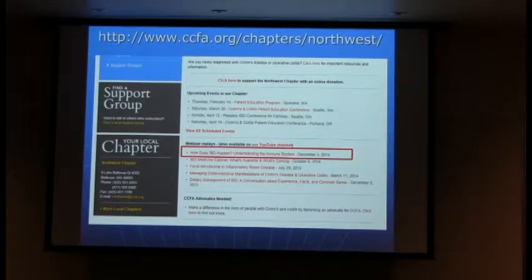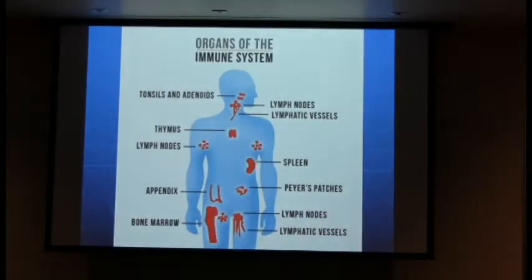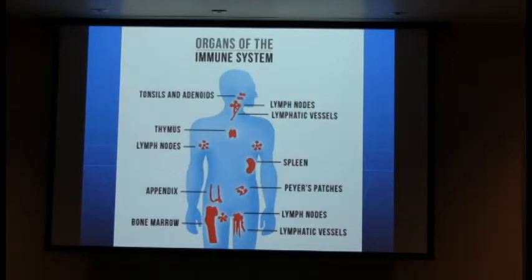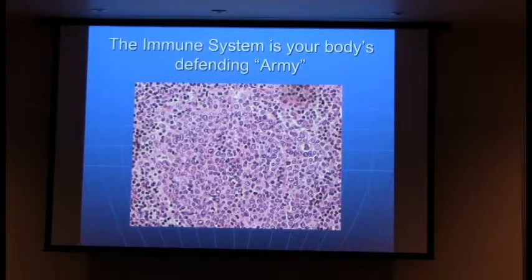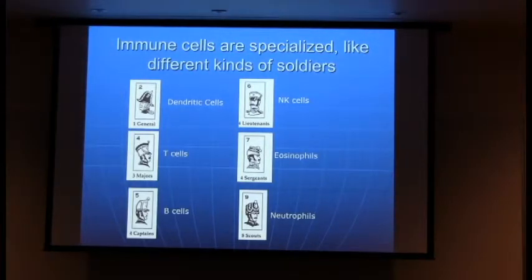When we talk about the immune system, it's not as easy to visualize conceptually because it doesn't have an anatomic location the way your heart or liver does. The immune system is spread out throughout your body in many different places. But the gastrointestinal tract actually represents one of the largest collections of immune cells in your entire body. The immune system is sort of your body's defending army — this is how you protect yourself from invaders.